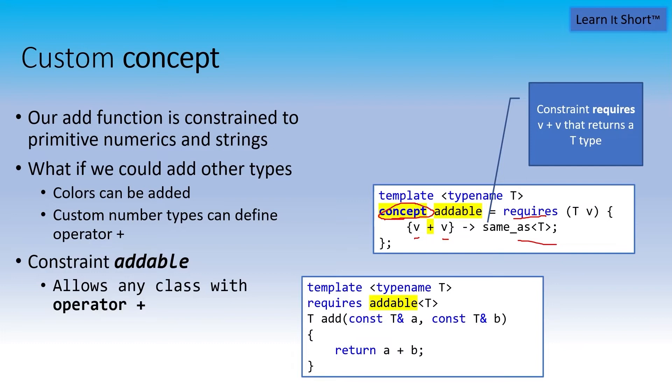The compiler is going to try to expand this template with whatever type I substitute for T. If I substitute color and try to add two colors together, and color has a plus operation, then the substitution is successful. If it doesn't have that, then the substitution fails and the compiler says, I can't instantiate this template.